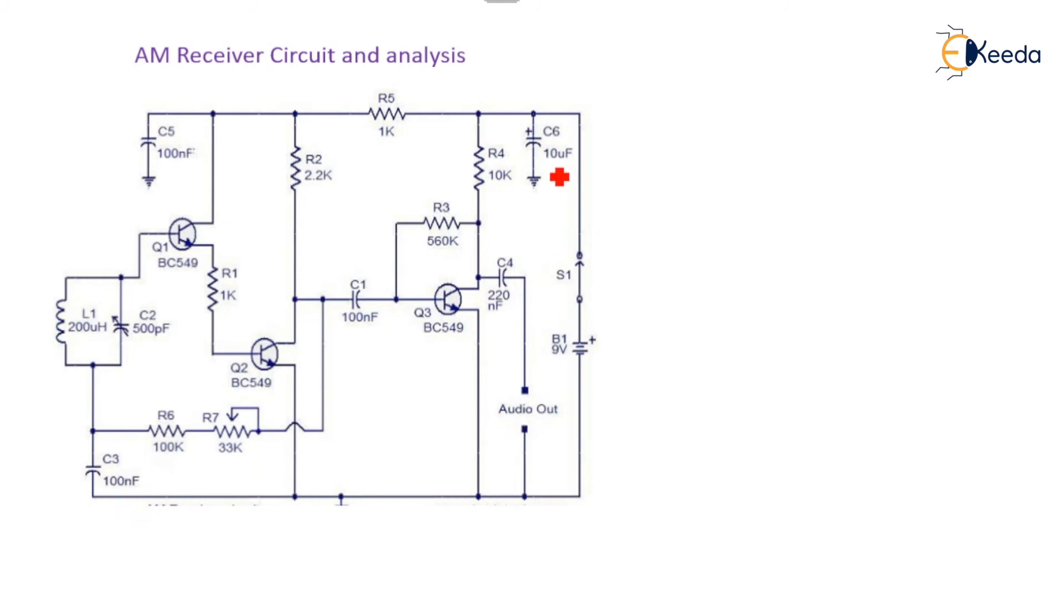Now, C6 is specially provided for noise filtering. In this way, we can recover the modulating signal at the AM receiver because the carrier is already removed across transistor Q3.